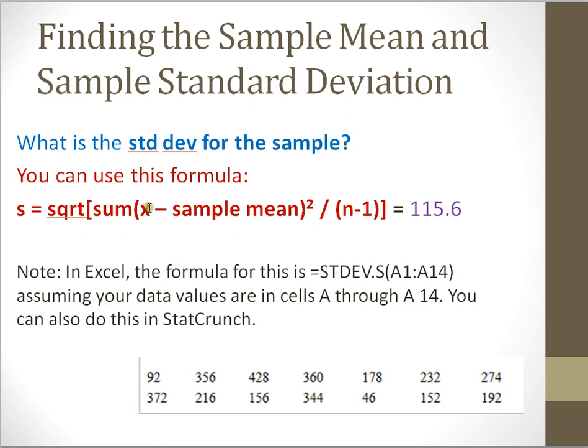It says subtract the mean from all the values of x, square each one of them, sum them all together, then divide that sum by n minus 1, and then finally take the square root. And when you do, that's the value that you get.